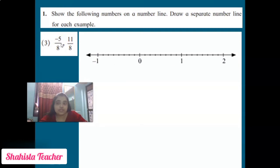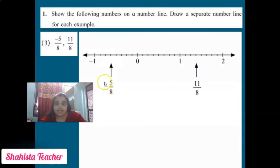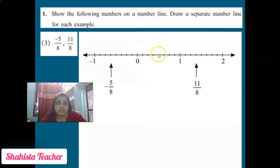We have -5/8 on the left hand side and 11/8 on the right hand side. For -5/8, from zero go backward: 1, 2, 3, 4, 5 — we put -5/8 here. For 11/8, from zero go forward on the right hand side: 1, 2, 3, 4, 5, 6, 7, 8, 9, 10, 11 — we put 11/8 here.